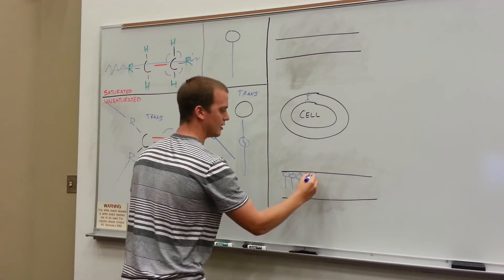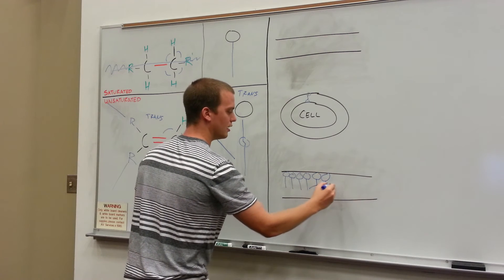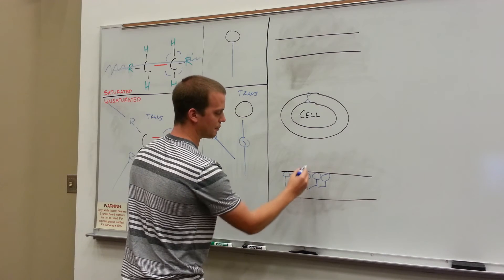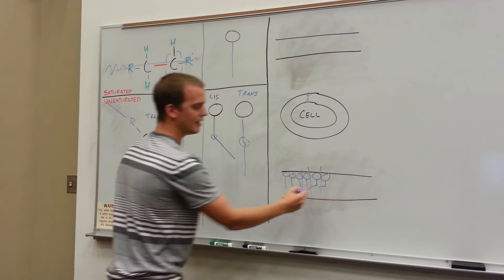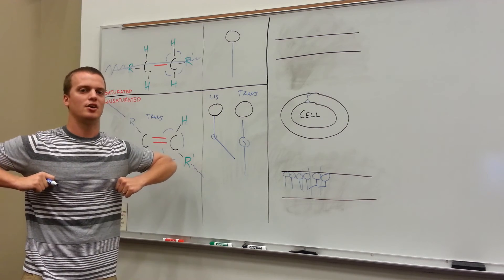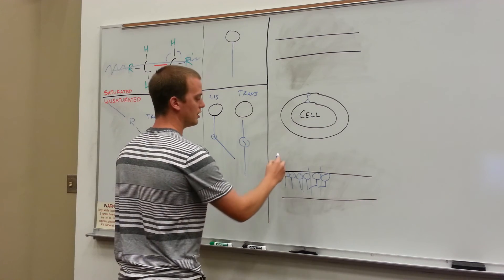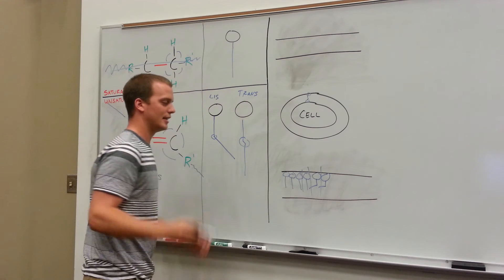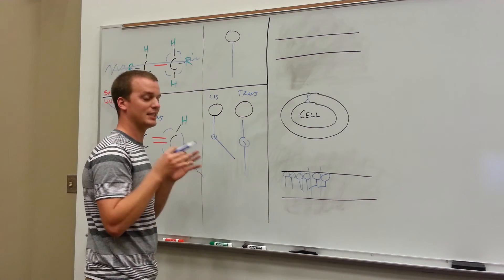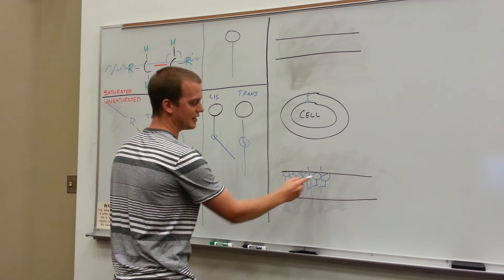However, if we put a cis one in there, a cis pushes apart its neighbors. You notice that this takes up less space than one that has a huge bend in it. It pushes apart its neighbors, just like if you're in an elevator with your arms like this rather than being in an elevator with your arms down. Trans is going to allow for less mobility. So since trans allows for less mobility, less mobility in your phospholipid bilayer is bad. And that's why a trans fatty acid is worse for you than a cis fatty acid.